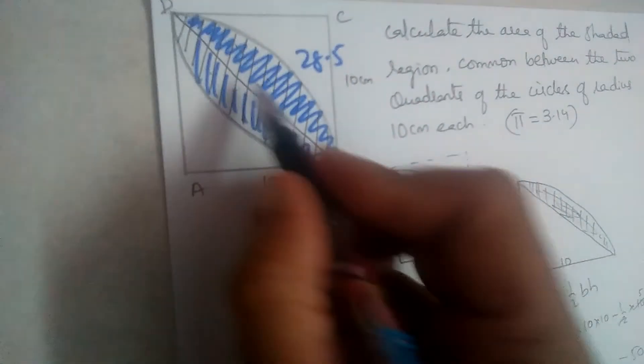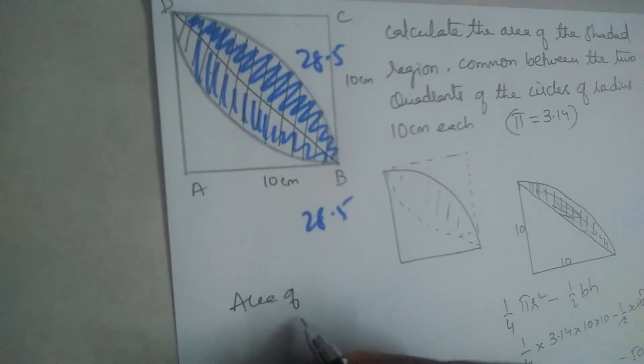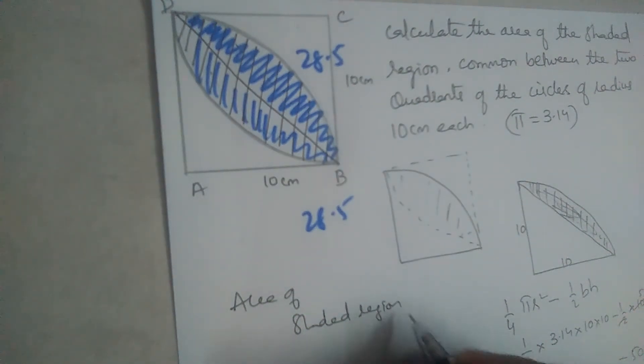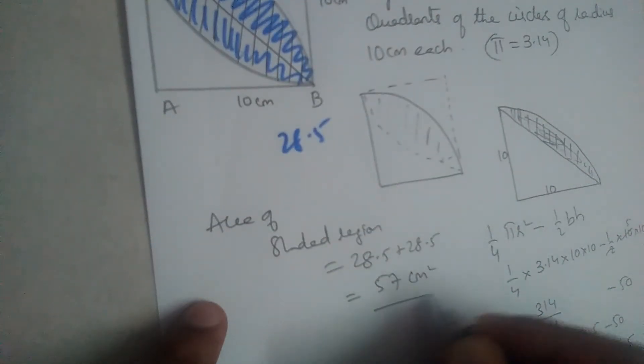So area of this complete shaded region will be 28.5 plus 28.5, which will be equal to 57 centimeters square.